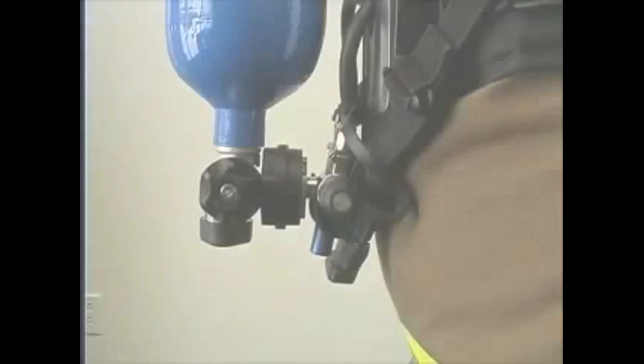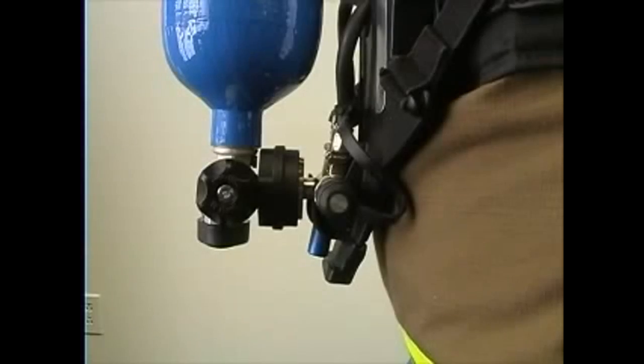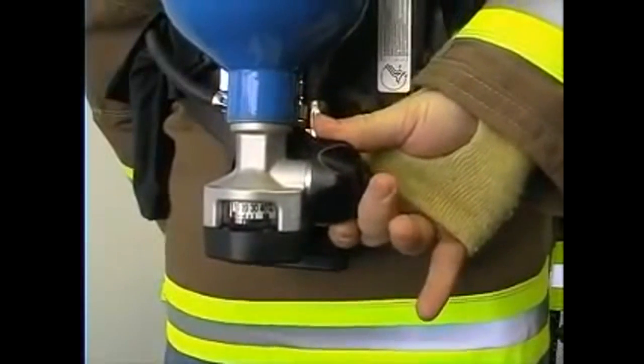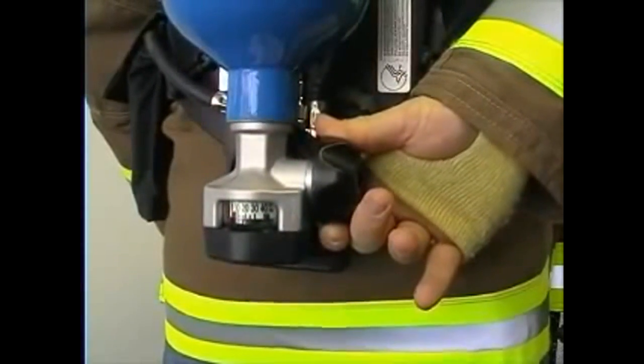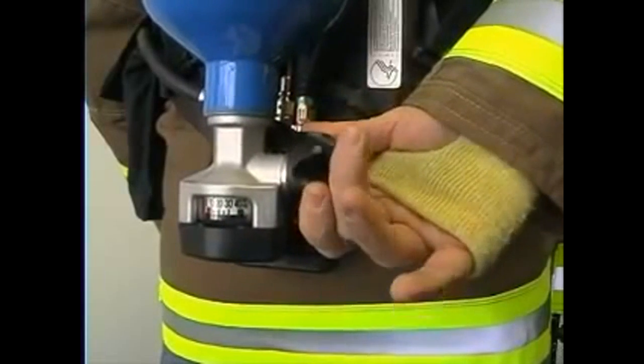When using the SCBA, the cylinder valve handle must be fully opened. This will prevent the cylinder valve handle from being accidentally turned off. Once you have opened the cylinder valve all the way, then back off the cylinder valve handle a half a turn. This will help prevent the cylinder valve handle from sticking.